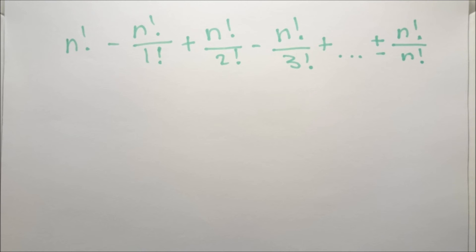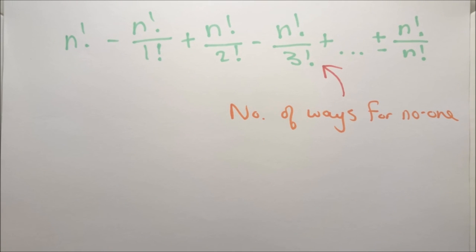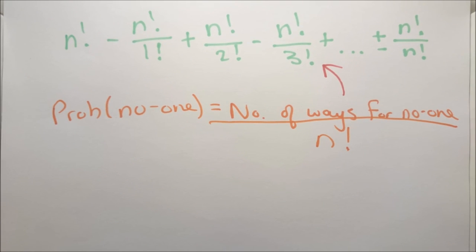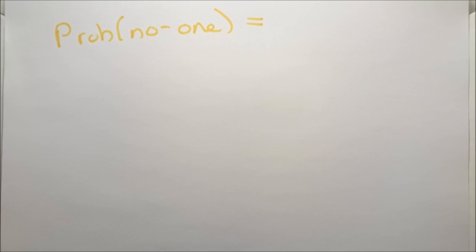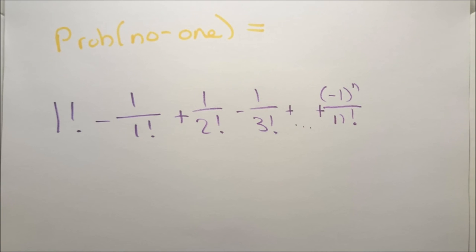This is the total number of ways in which no one draws themselves. We know that the probability that no one draws themselves is this divided by n factorial. Notice that the n factorials all cancel out so we are left with 1 minus 1 over 1 factorial plus 1 over 2 factorial minus 1 over 3 factorial all the way up to minus 1 to the n over n factorial.